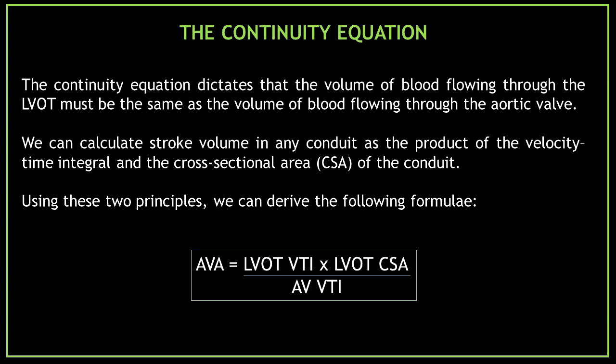In order to obtain the aortic valve area, we apply the continuity equation. The continuity equation dictates that the volume of blood flowing through the LVOT must be the same as the volume of blood flowing through the aortic valve. We can calculate stroke volume in any conduit as the product of the velocity-time integral and the cross-sectional area of the conduit. Using these two principles, we can derive the continuity equation formula.